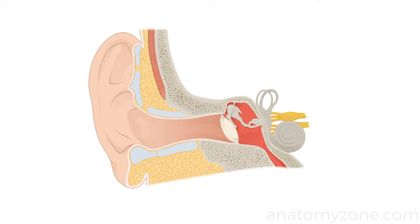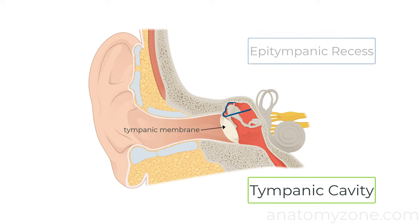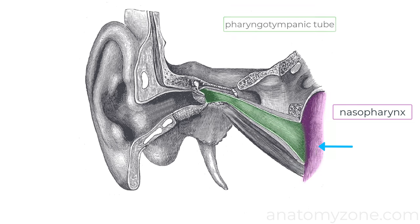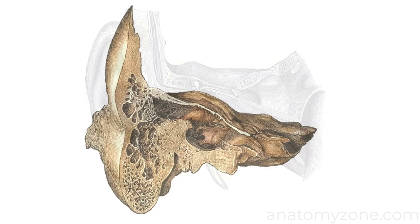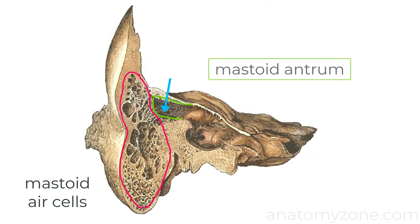It's divided into two parts: the tympanic cavity, which is adjacent to the tympanic membrane, and the epitympanic recess or the attic, which is the space superior to the tympanic cavity. The tympanic cavity connects anteromedially with the nasopharynx via the pharyngotympanic tube, otherwise known as the eustachian tube. Posterosuperiorly, it communicates with the mastoid air cells via the mastoid antrum.